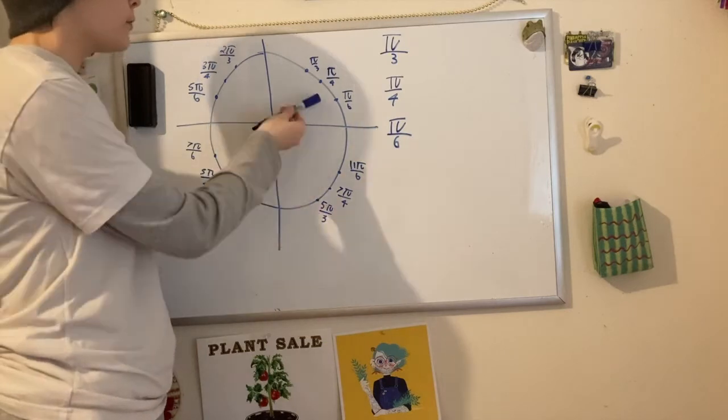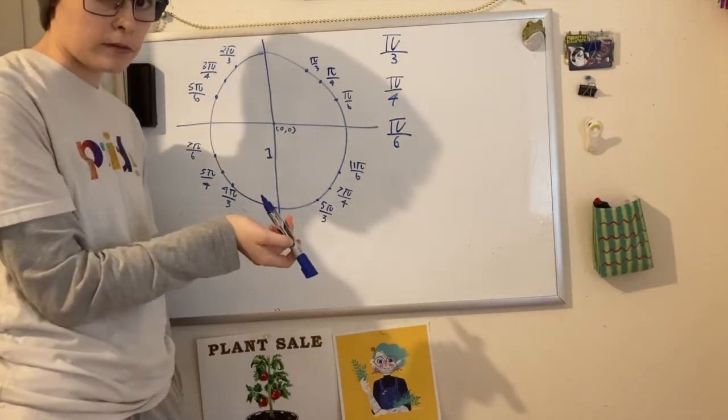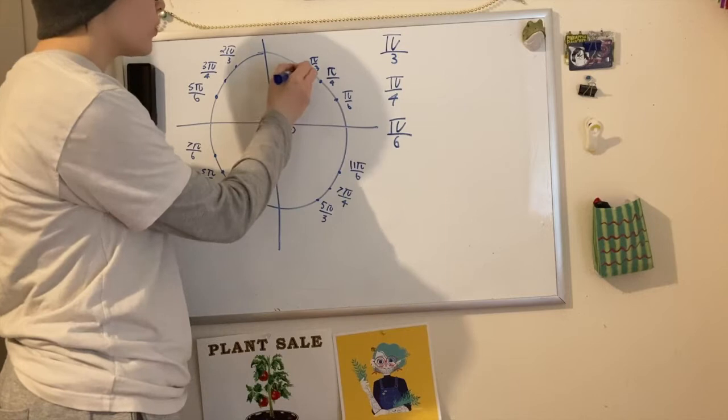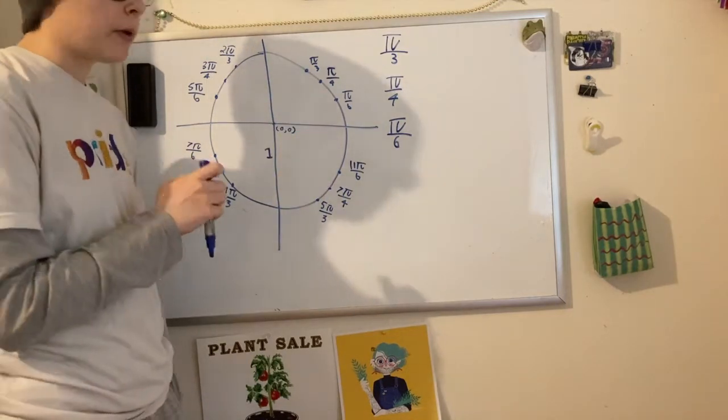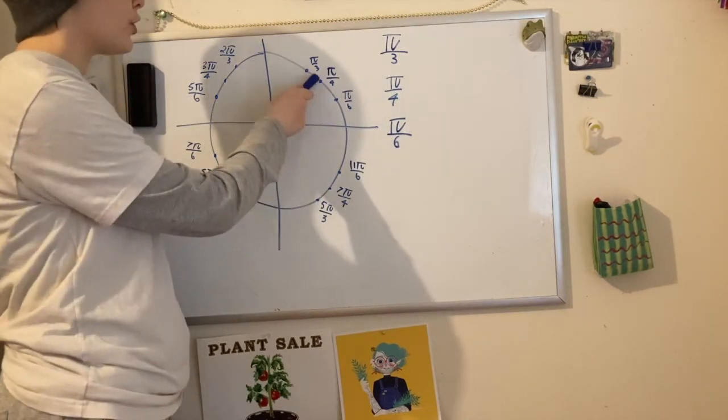Let's start with quadrant 1. We have three important points that you have to memorize. The angle of π/6, π/4, and π/3. You might know them as 30 degrees, 45 degrees, and 60 degrees.